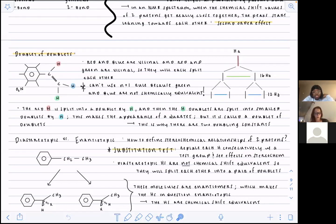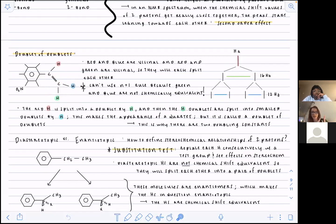The reason the peaks aren't symmetrical is because when the hydrogens — the green and blue ones — are so close together, the protons are interfering with each other. This is called the second-order effect: when the protons are really close together, the interference causes the peaks to lean towards each other. We don't really need to know why that happens, but that's what it's called.